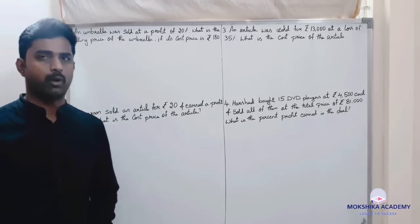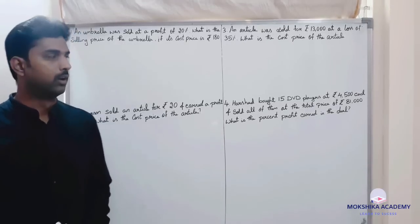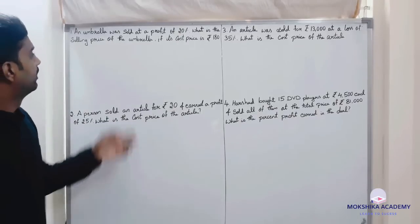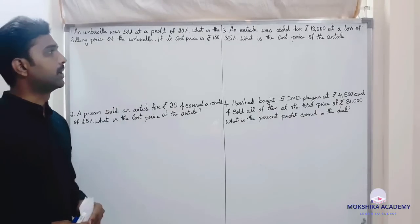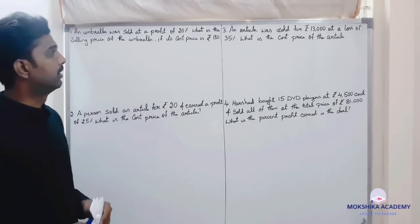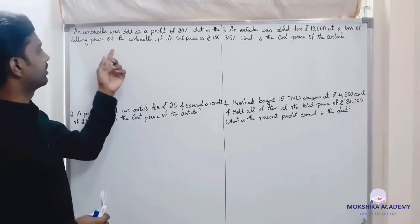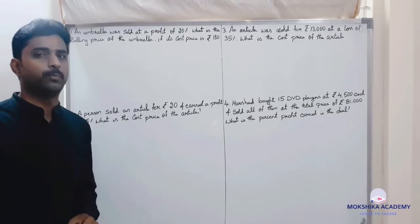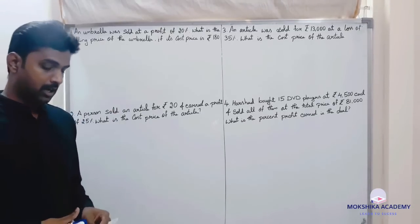Students, let us solve some problems regarding profit and loss. First question: An umbrella was sold at a profit of 20 percent. What is the selling price of the umbrella if its cost price is rupees 180? Always remember.